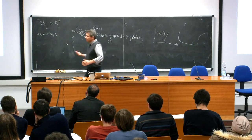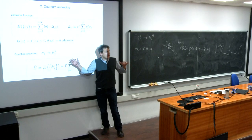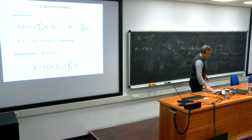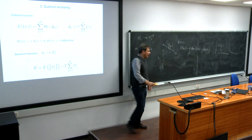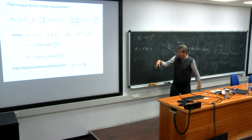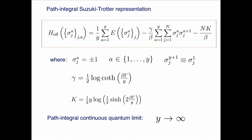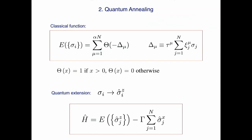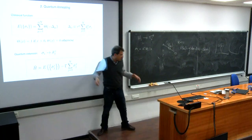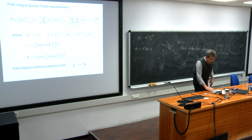The reason quantum annealing typically doesn't work is that the gap is exponentially small. But in this case it does work, even though simulated annealing fails. To show this, you perform a quantum Monte Carlo simulation — the Suzuki-Trotter transformation — mapping the problem by adding one extra time dimension and rewriting a new Hamiltonian with many replicas of the original system coupled ferromagnetically.